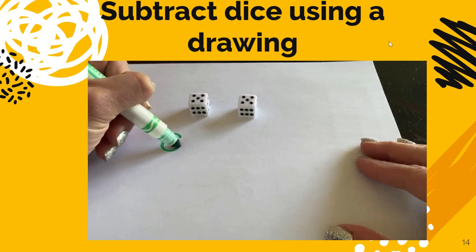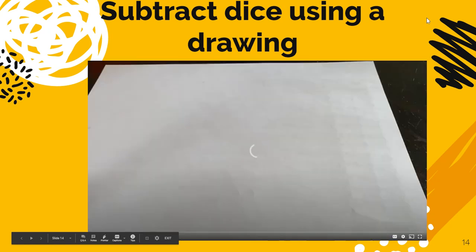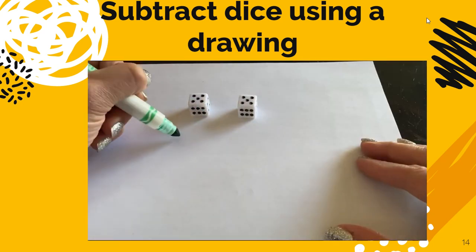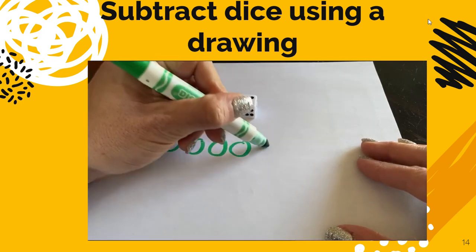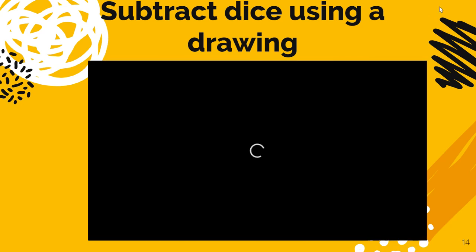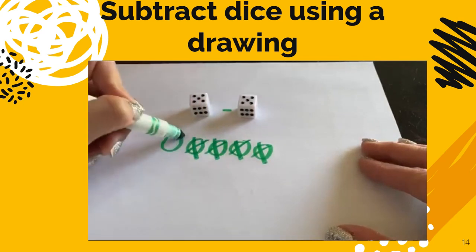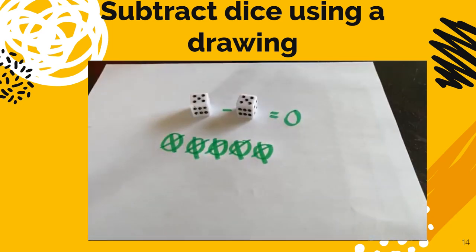Alright, let's look at subtracting dice using a drawing. The first thing I'm going to do is roll my dice. And I get a 5 and a 5. So I'm going to draw 5 circles because that's the first number that I have. And then I need to get rid of however many are on the second number. So, in this case, I'm going to get rid of 5. So I'm going to mark them with an x. 5 minus 5 equals 0, because I have 0 circles left.